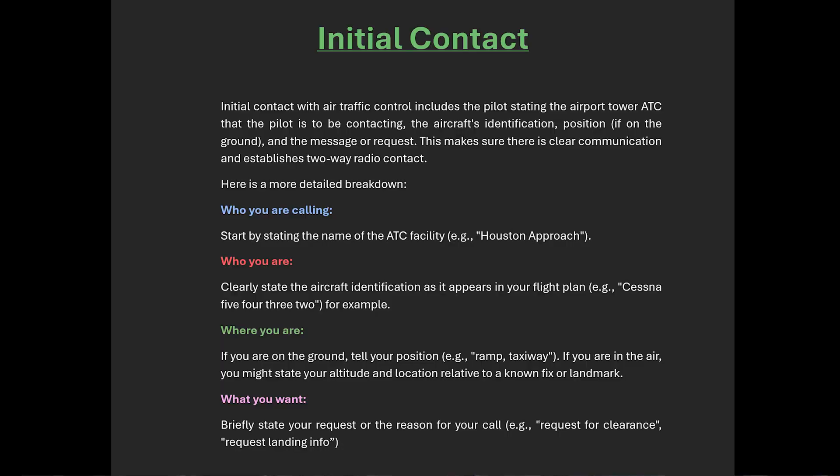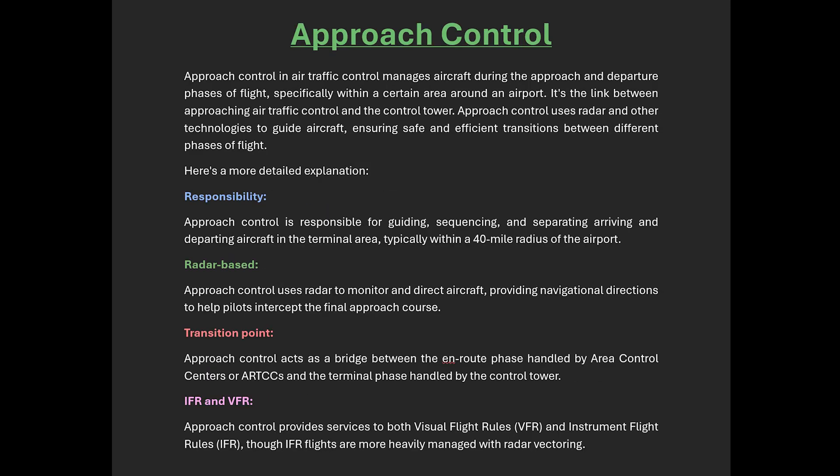By the way, on initial contact at an air traffic control facility — like with an approach control facility or an en route facility — they would check on and give their altitude, and then you verify their Mode C. You know that it's accurate. You can look at your data block.